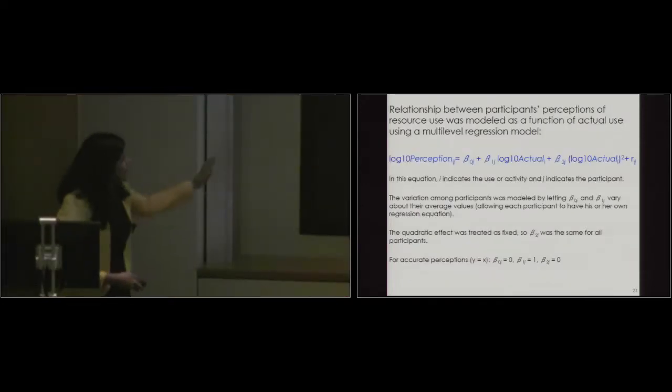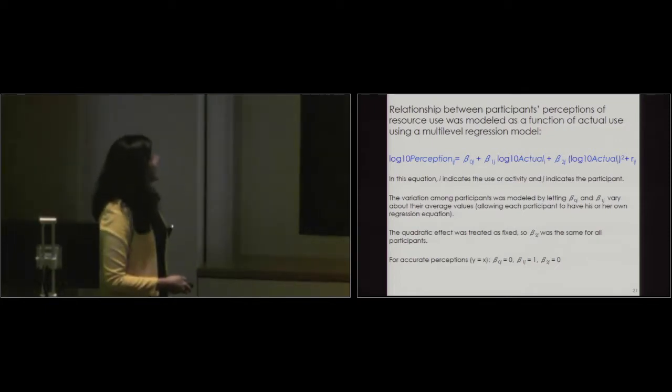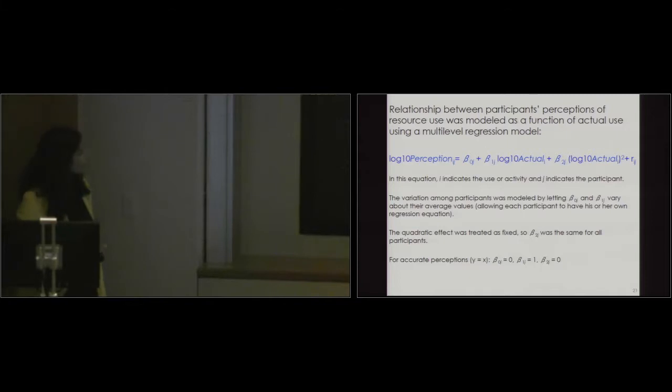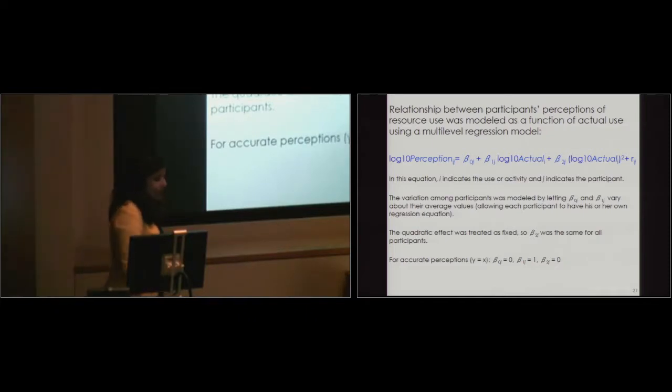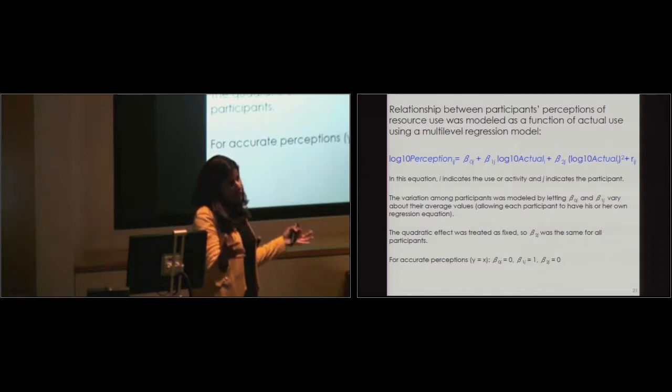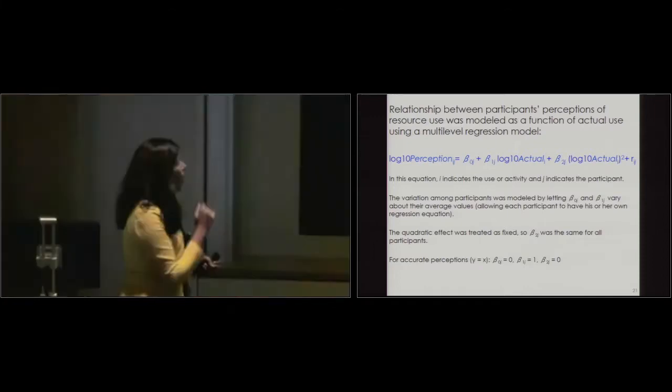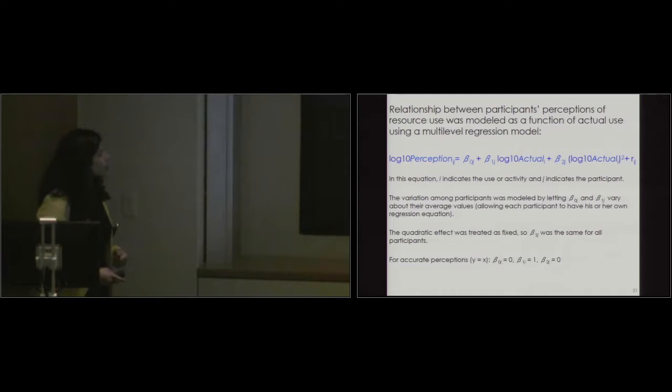So this is the only slide with an equation. So what we did was we looked at the relationship between participants' perceptions as a function of actual water use using a multi-level model. And why did we use a multi-level model? Every single individual was asked for maybe 10 to 15 different appliances. How much water do you think this appliance uses? This appliance, this appliance. So all of the errors are correlated. So this model actually takes care of the correlation within your errors. So I can talk more about this model at the end, but let me explain it using a curve.